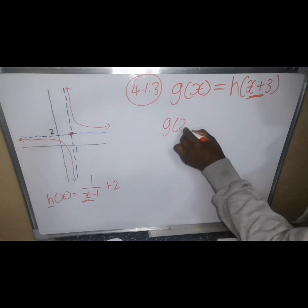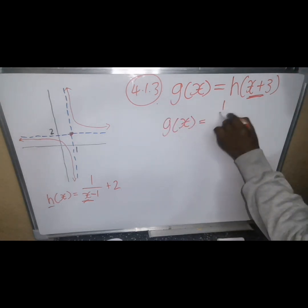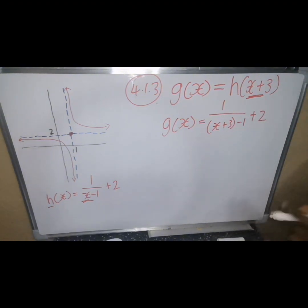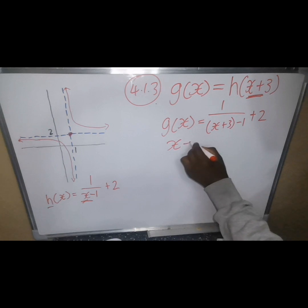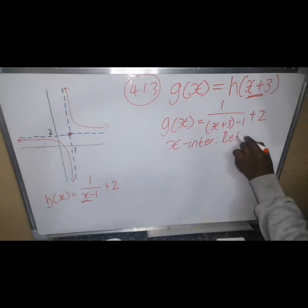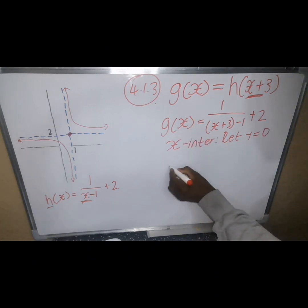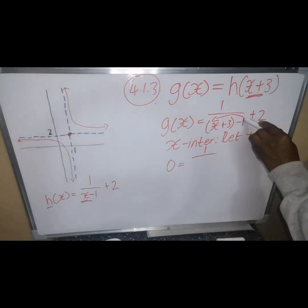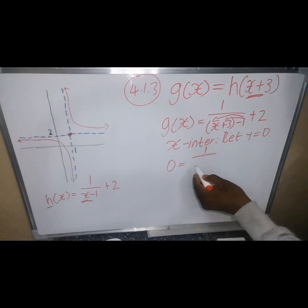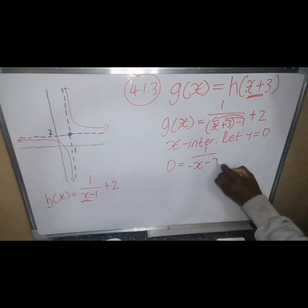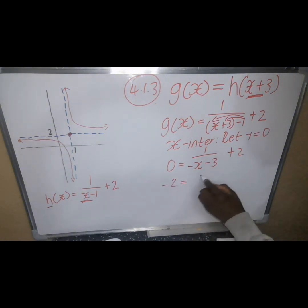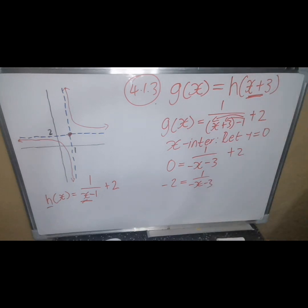So g(x) = 1/(x + 3 − 1) + 2, which simplifies to 1/(x + 2) + 2. To find the x-intercept, let y equal zero: 0 = 1/(x + 2) + 2. Transposing 2 to the left gives negative 2 = 1/(x + 2). Cross-multiplying: negative 2 times (x + 2) equals 1, which expands to negative 2x minus 4 equals 1.